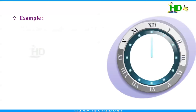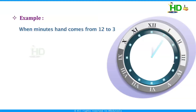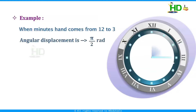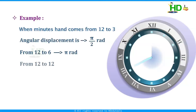Now we take one example. On a clock, when the second hand moves from 12 to 3, the angular displacement is π/2 radians. When it moves from 12 to 6, the angular displacement is π radians. When it returns again to 12, the angular displacement is 2π radians.